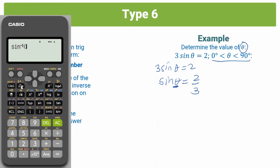And what you're going to put in the function is what you have on your right-hand side. So in this case, 2 over 3. So I'm going to put in a fraction, 2 over 3. I'm going to close it and hit equals.